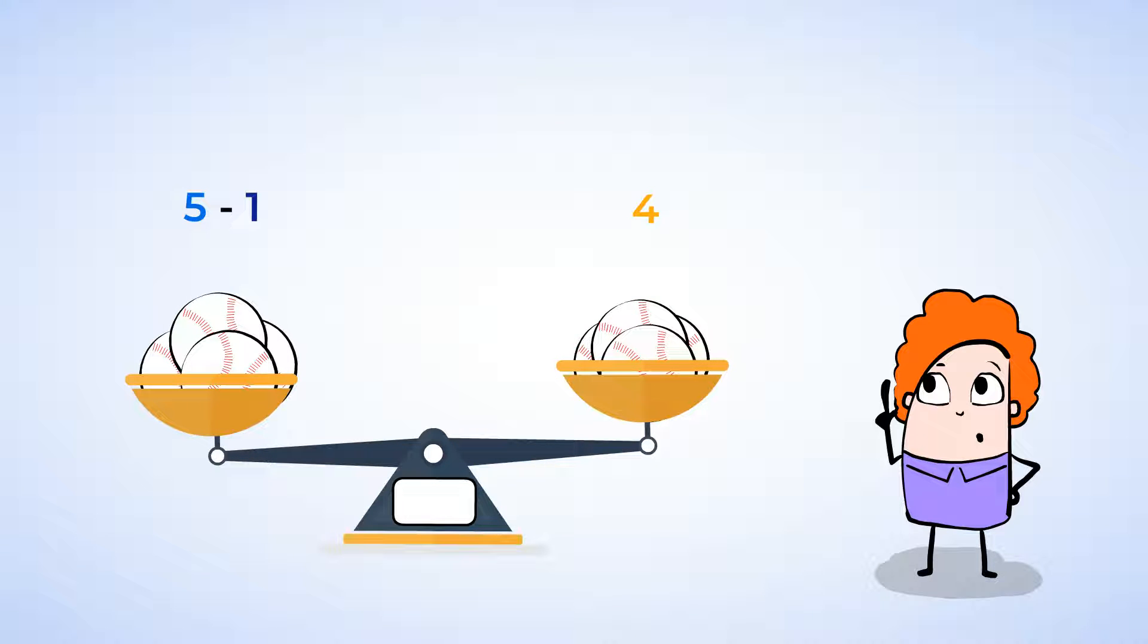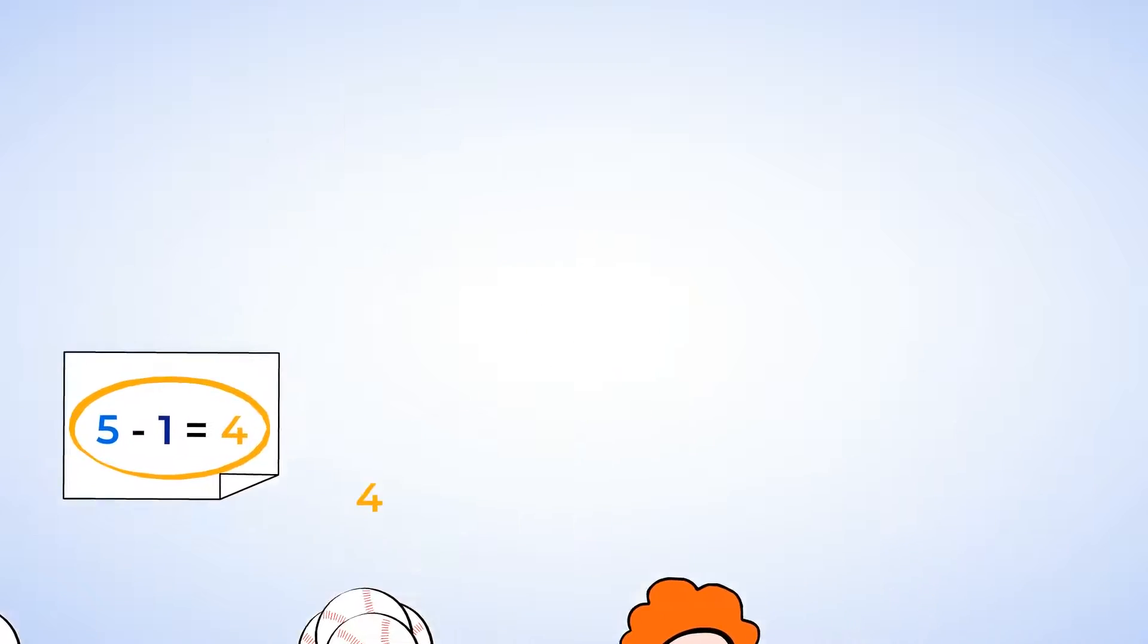And wow, the scales are next to each other again. And that means that five minus one and four are the same. We can say that they are equal and put an equal sign between them. Five minus one equals four. There are four baseballs on each side of the scale. So both sides are definitely equal. Way to go.